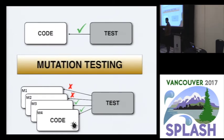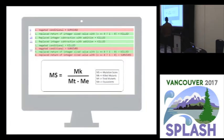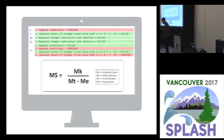If our test suite fails when executed against a mutant, we say we killed the mutant. If our test suite does not fail, we say the mutant survived, and we need to increment our test suite to kill the mutant. At the end, we have a report like this one here. Each line represents a mutant. The green line says the mutant was killed, which is good. The red line says the mutant survived, so we need to create another test case. We can calculate the mutation score to measure if my test suite is good enough. It gives a number between zero and one — how close to one is better, meaning my test suite is better.